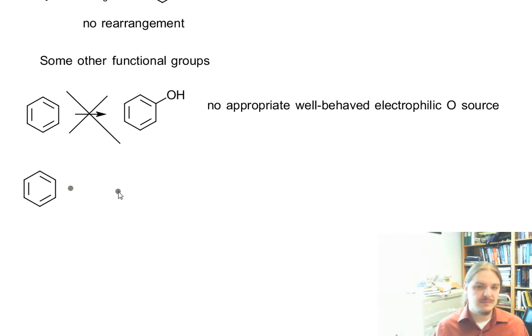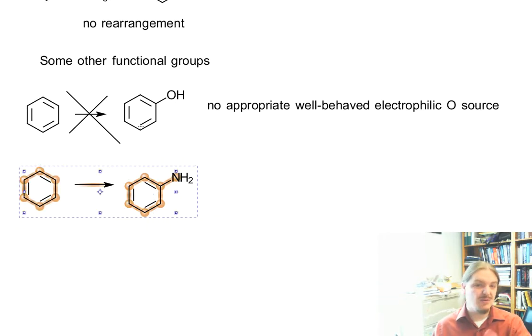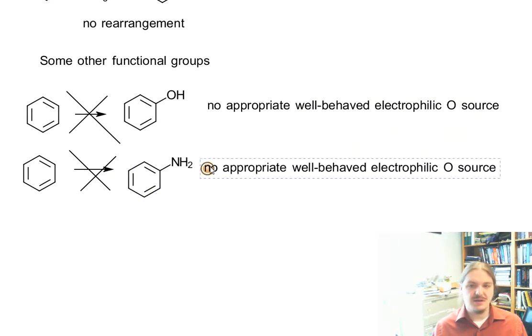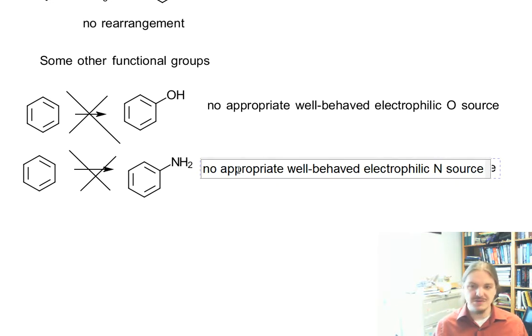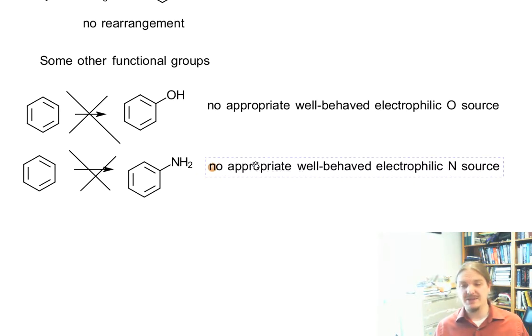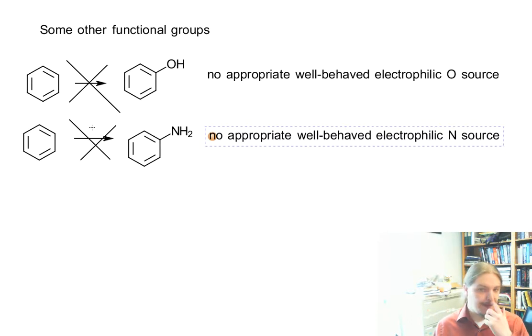Likewise, it's hard to directly convert benzene to aniline. And I will resolve both of these issues for you before the end of this video. And it's a similar thing. There's no really appropriate, well-behaved electrophilic nitrogen source. In a previous video on electrophilic fluorination, I had a nitrogen fluorine bond. And even though fluorine is more electronegative than nitrogen, the fluorine is actually the electrophile and the nitrogen is the leaving group. And generally all sorts of things that look like they might be electrophilic sources of nitrogen, that nitrogen is actually making the other thing more electrophilic. Both of these things need to go through some intermediate compound.